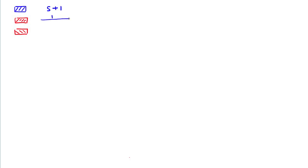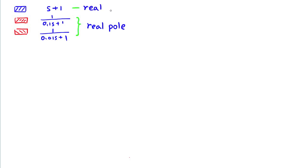These are the three building blocks we are looking at in this worksheet problem. The first two are real poles, as real numbers such as negative 10 or negative 100 make the denominator become zero. And s plus 1 is called a real zero because the real number negative 1 makes the numerator s plus 1 become zero.